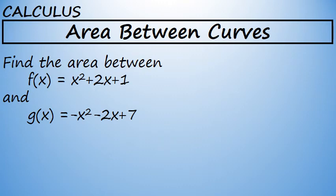Find the area between f of x equals x squared plus 2x plus 1 and g of x equals negative x squared minus 2x plus 7.